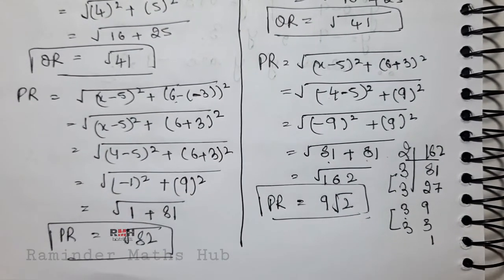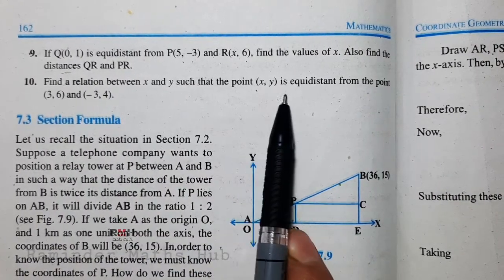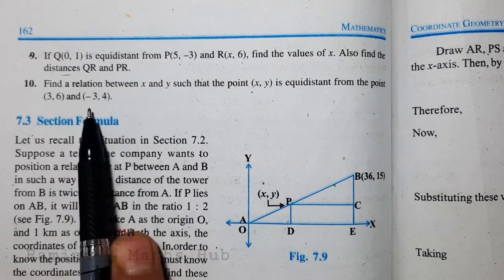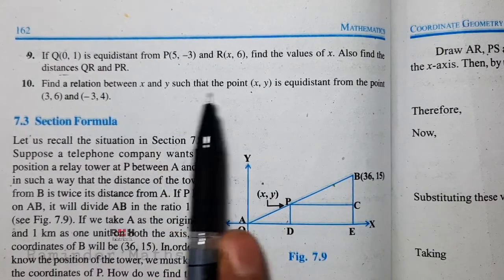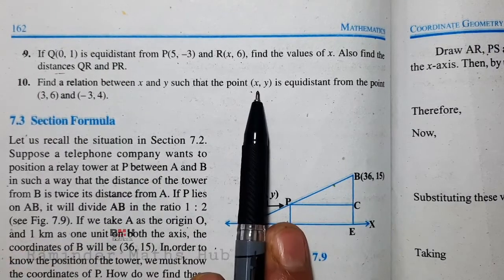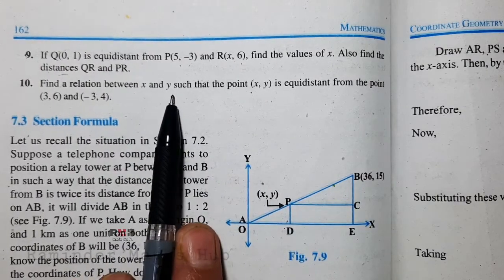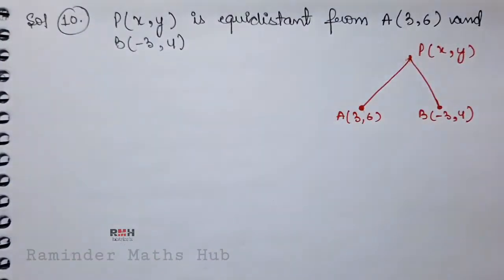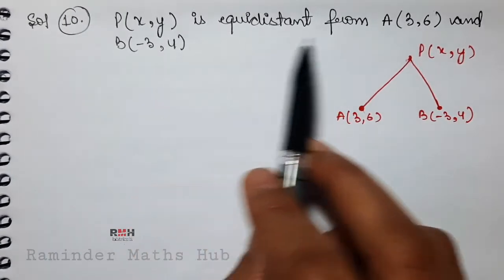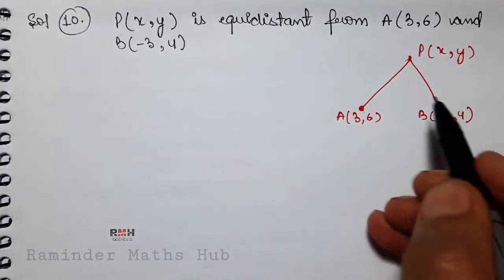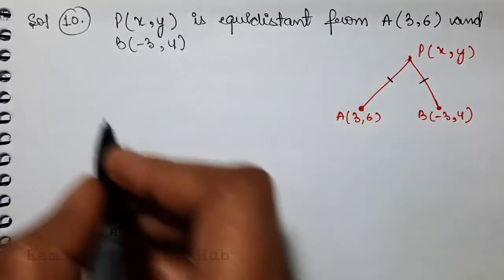Question number 9 is over. Now question number 10: find a relation between x and y such that the point (x, y) is equidistant from the points (3, 6) and (-3, 4). We have a point (x, y) which is equidistant from these two points, meaning its distance to both points is equal. We need to find the relation between x and y.